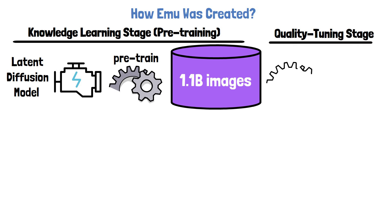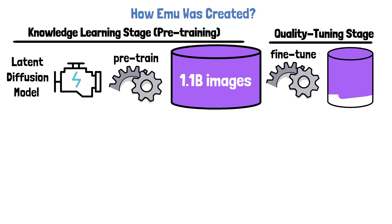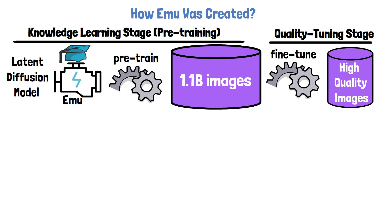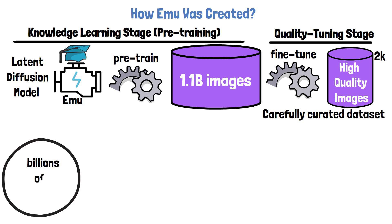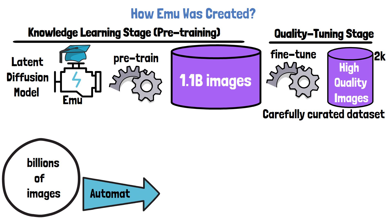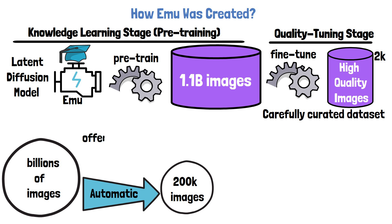For this reason we have the second stage, which is called quality tuning. In this stage we already have a pre-trained latent diffusion model, and we fine-tune it on another dataset of high quality images. By the end of this step the model is named EMU, and it is now strong in generating highly aesthetic images consistently. What's special here is that this dataset is very small, containing only a few thousand images. These images are carefully curated to be extremely visually appealing. The curation pipeline starts with a set of billions of images, and the first step is automatic filtering, which reduces the set to 200k.